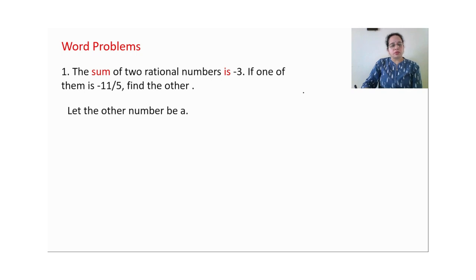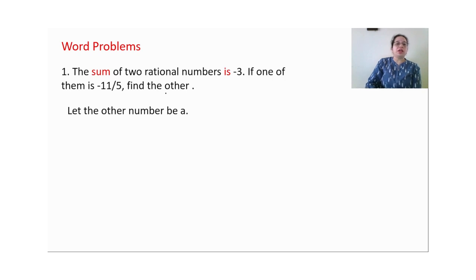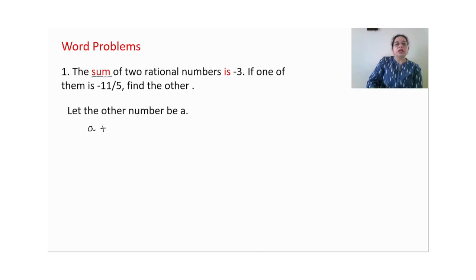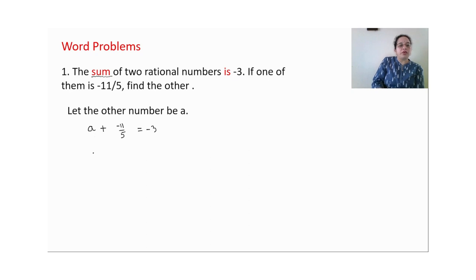Word problem 1: The sum of two rational numbers is −3. If one of the numbers is −11 upon 15, find the other. Let the number be a. Sum means plus sign; 'is' means equal to −3. One number is −11 upon 15. We now have the equation and need to solve for a.